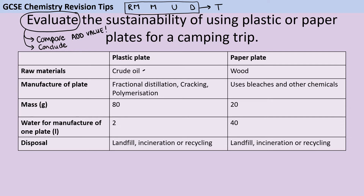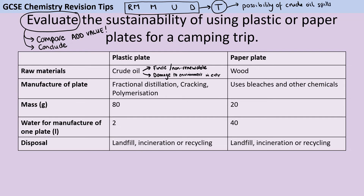Starting with the raw materials: crude oil, which is used to make the plastic plate, is a finite or non-renewable resource. There's also going to be damage to the environment in extracting it — you have to drill down to get that oil, and that's not great. When transporting that oil, there's also the possibility of a crude oil spill, which is obviously completely disastrous for the environment. The paper plate is made from wood, which is a renewable resource, but in chopping down those trees there is going to be some habitat destruction. Often you'll have a plantation specifically grown to produce that wood, but there are still various organisms living there, and we may have had to fell a different habitat to make that plantation in the first place. On balance, the plastic is less sustainable than the paper plate when it comes to raw materials.